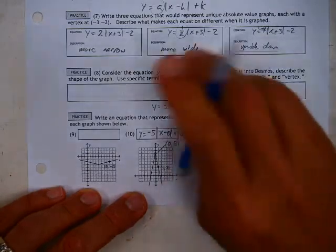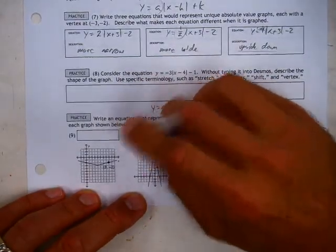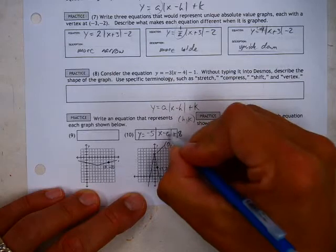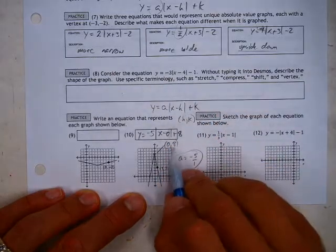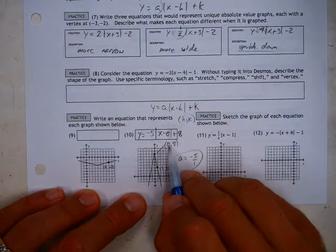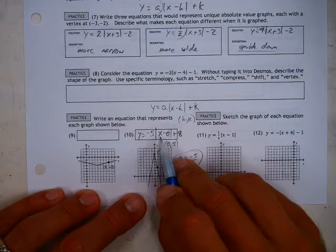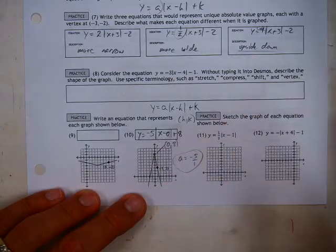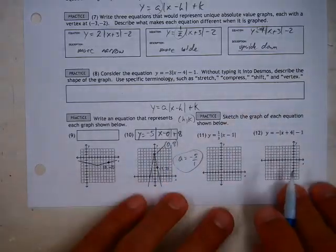I write the minus 0 simply because it's good to get in the habit of understanding that x minus whatever that value is inside the parentheses represents the vertex. So if I just said negative 5 times the absolute value of x plus 8, that's fine, but that's kind of the point.